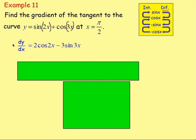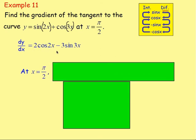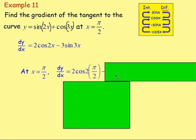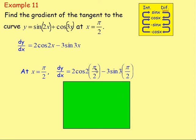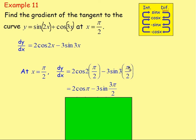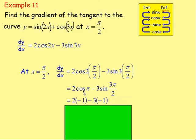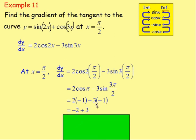We want the gradient of the tangent and we know x is π over 2. Replace x with π over 2: 2 cos(2 × π/2) minus 3 sine(3 × π/2). That gives 2 cos(π) minus 3 sine(3π/2). For the cos graph at π (180°), you get negative 1 — so 2 times negative 1. For sine at 3π/2 (270°), you get negative 1 — so negative 3 times negative 1. Working that out: 2 times negative 1 is negative 2, and we're taking away 3 times negative 1 which becomes add 3. Negative 2 plus 3 gives 1. That is the gradient of the tangent to the curve when x is π over 2.